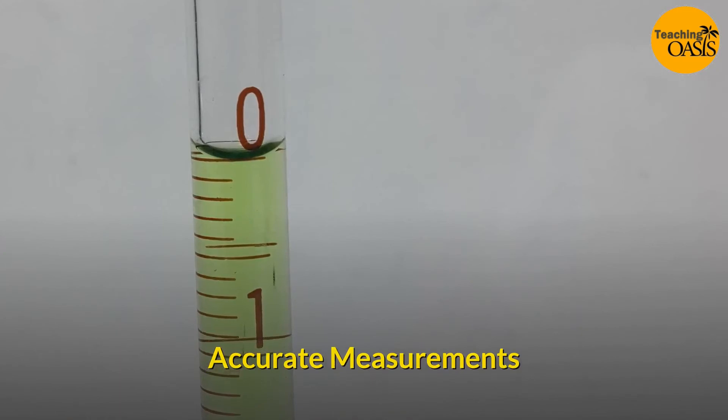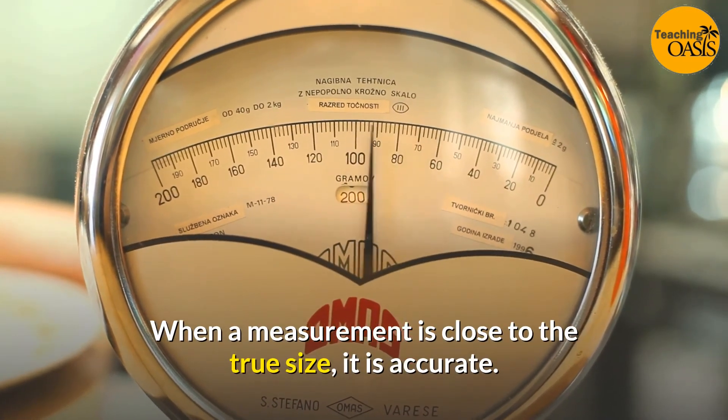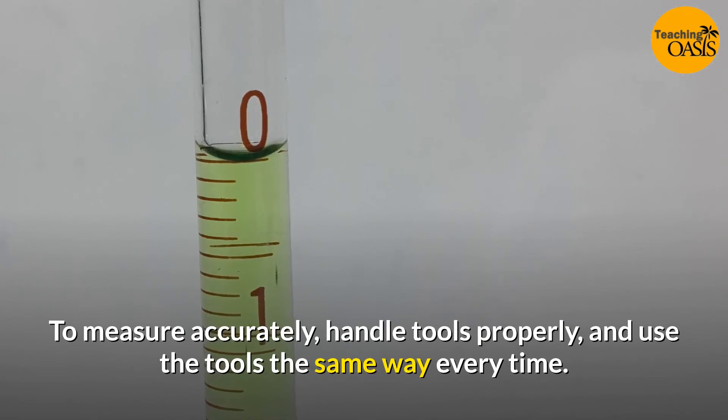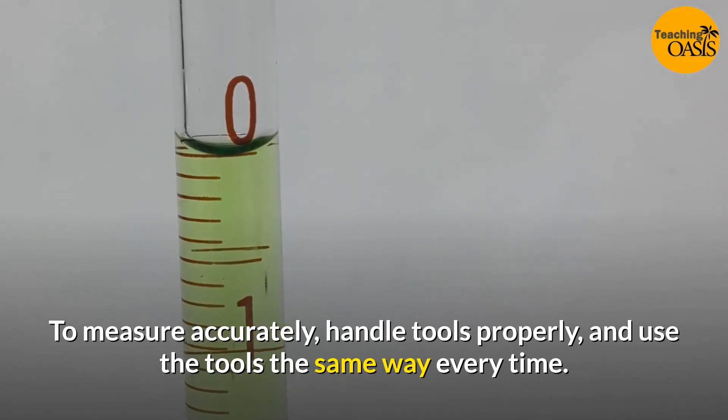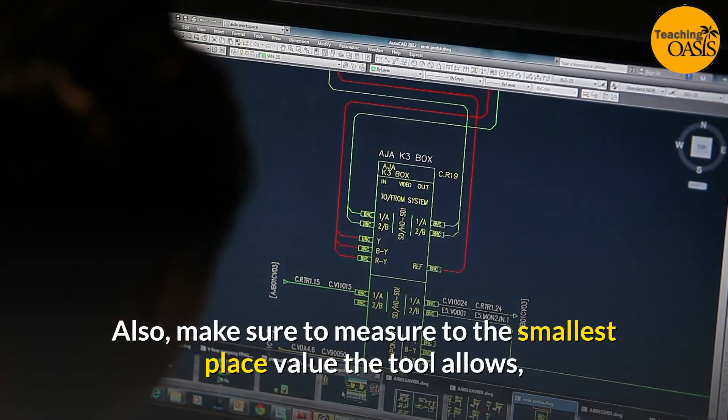Accurate measurements: When a measurement is close to the true size, it is accurate. To measure accurately, handle tools properly and use the tools the same way every time. Make sure to measure to the smallest place value the tool allows. Measure twice and record measurements carefully.